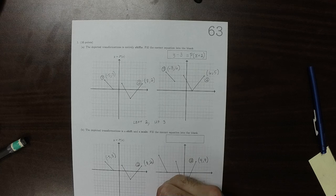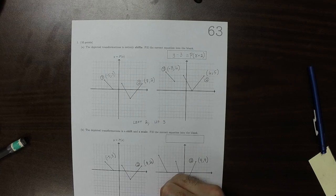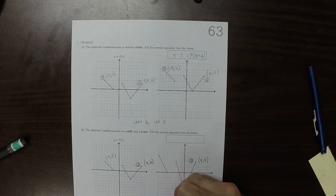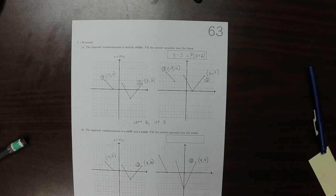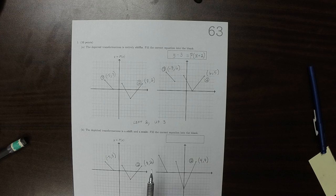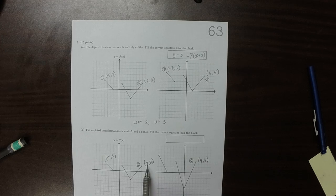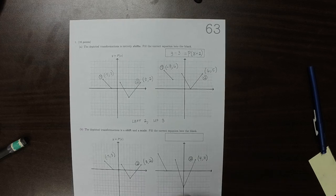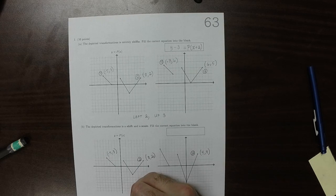So a vertical stretch by a factor of 2. And if it also contained a shift, that means that this 8 had to move over to 4. So it must have also gone left 4.